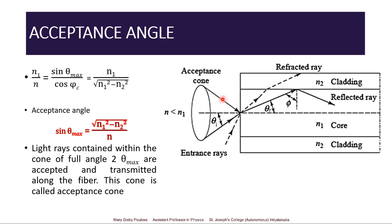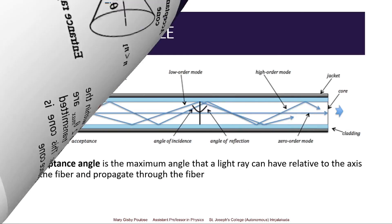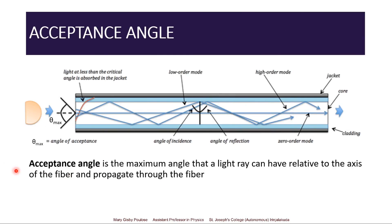If this is θmax on one side and θmax on the other side, a cone is formed. All the light rays falling within this cone will be transmitted — this cone is called the acceptance cone. The acceptance angle is the maximum angle that a light ray can have relative to the axis of the fiber and still propagate through it. Light rays falling outside the cone will get absorbed into the cladding and jacket.